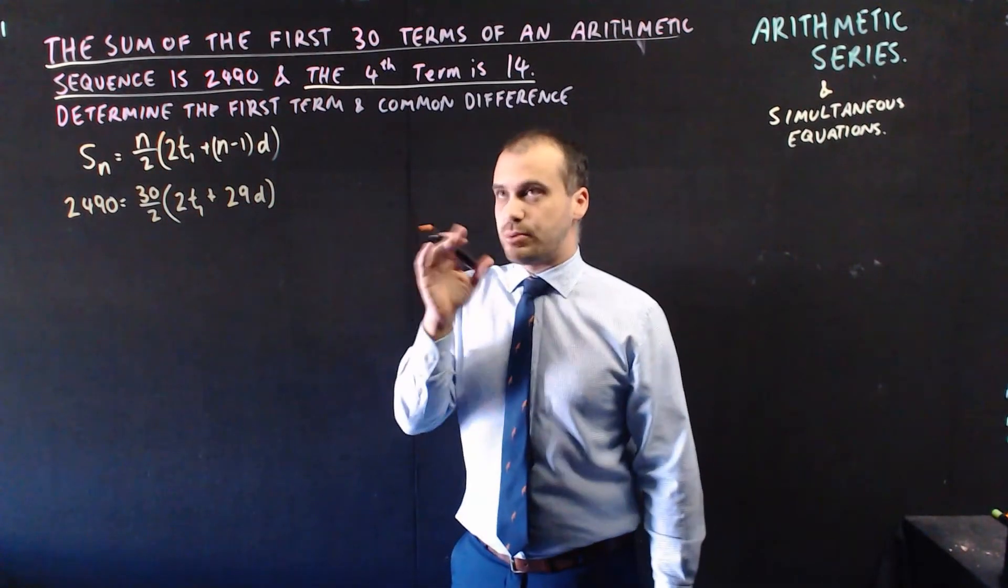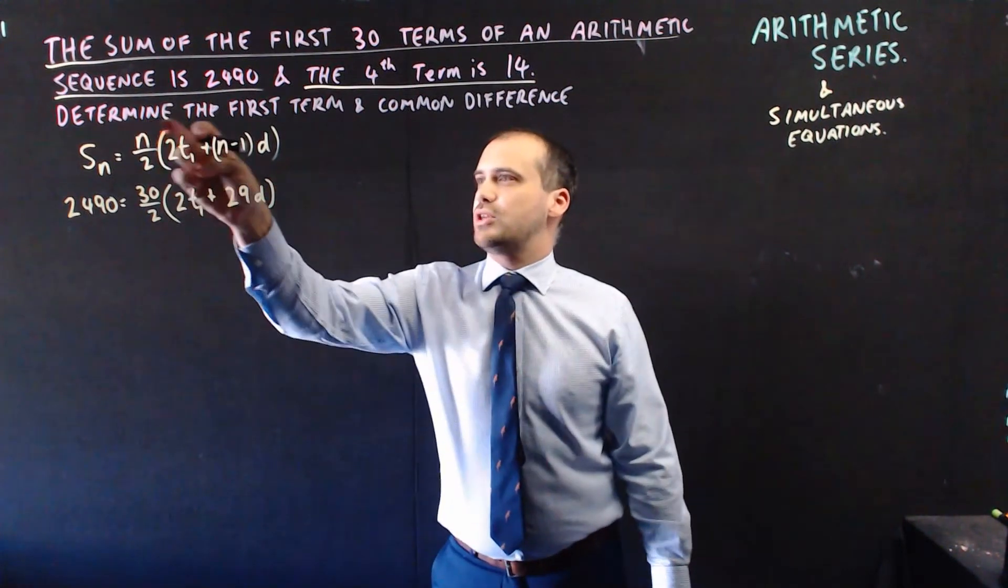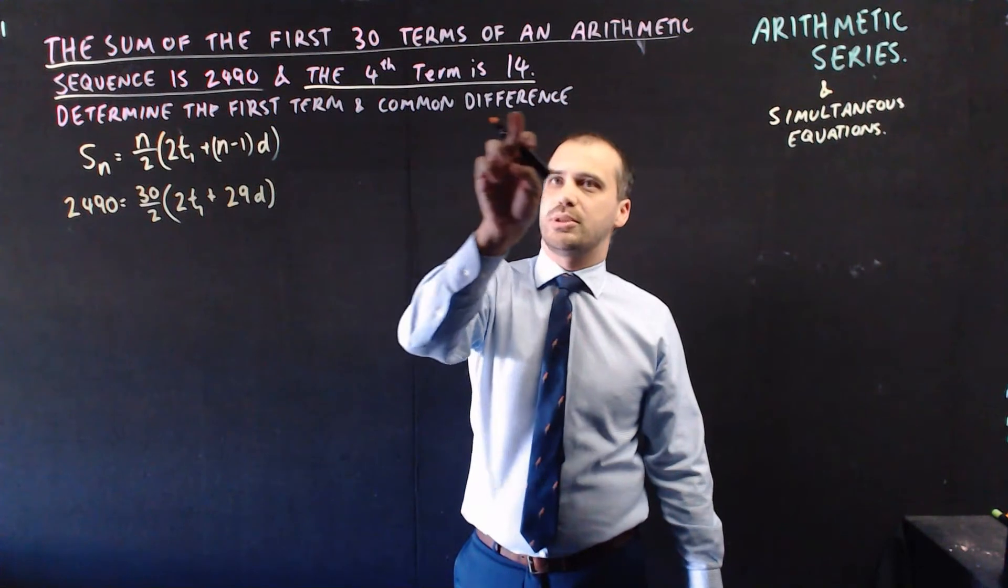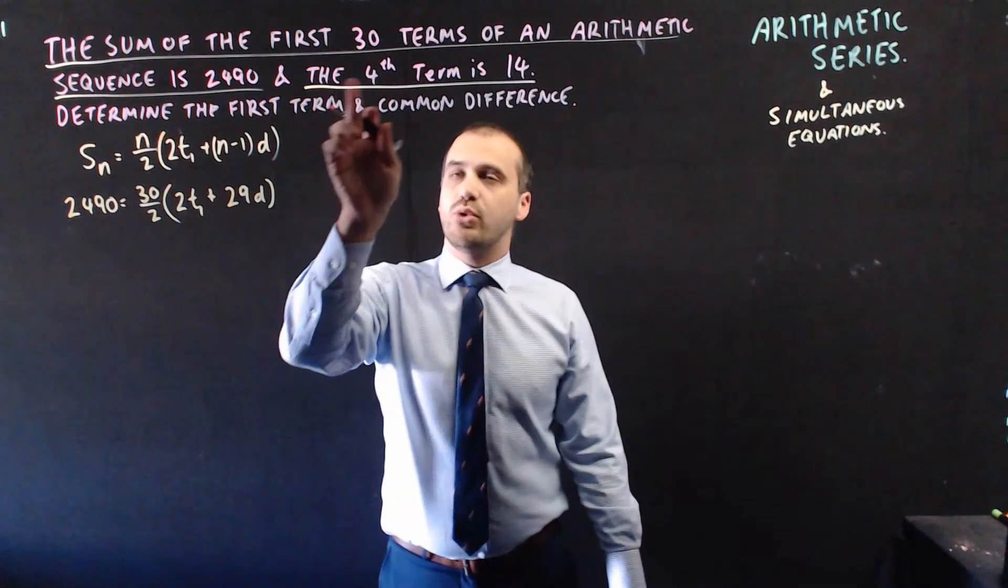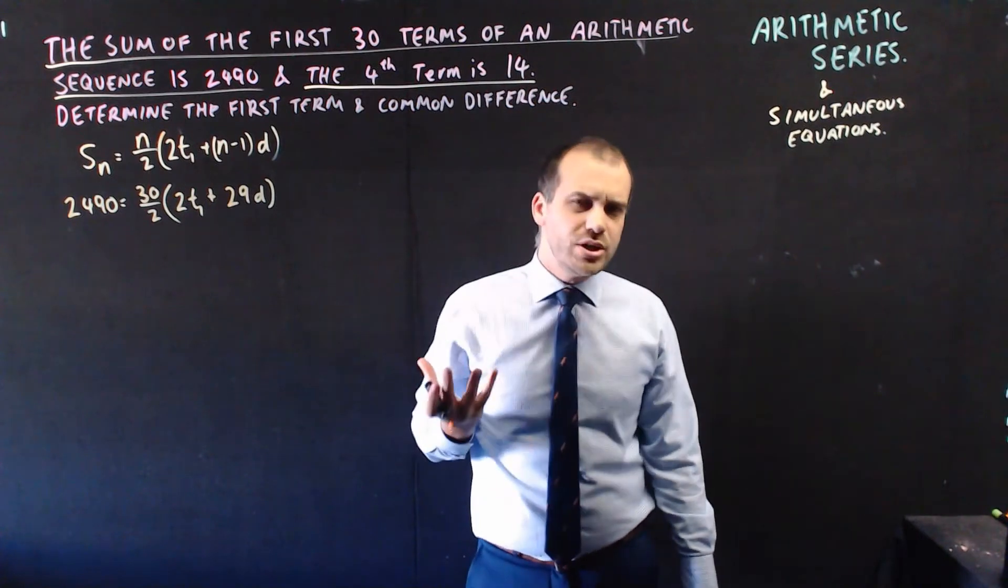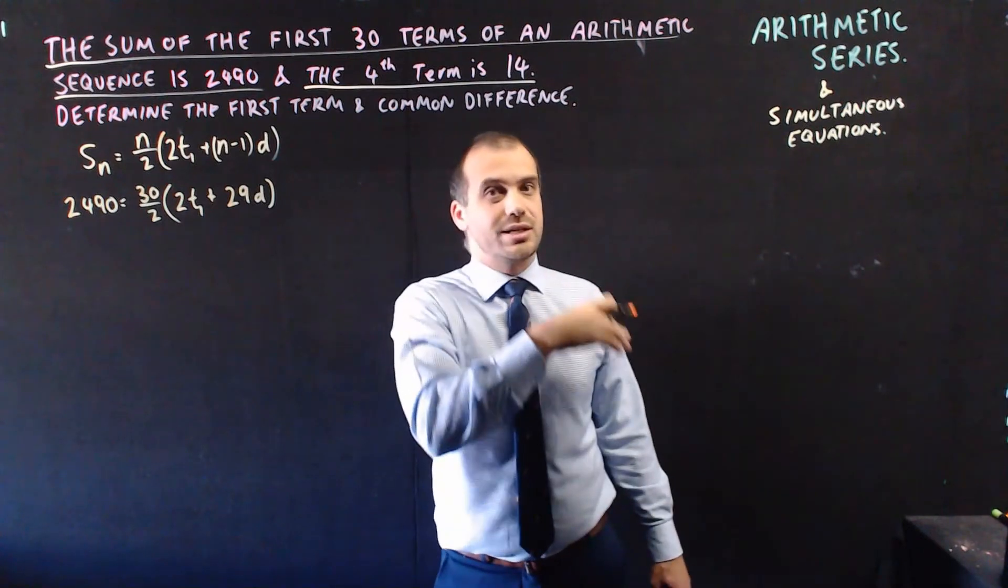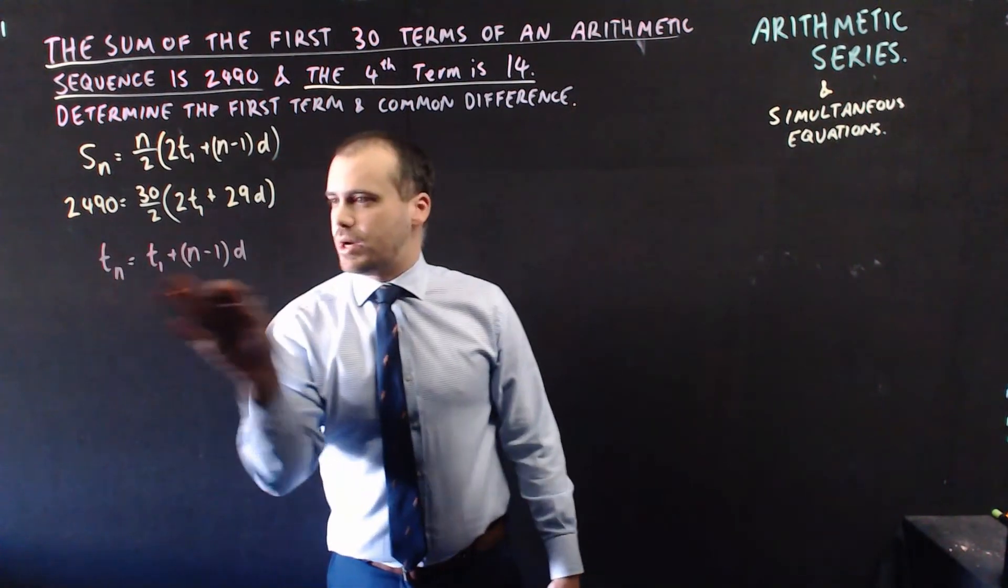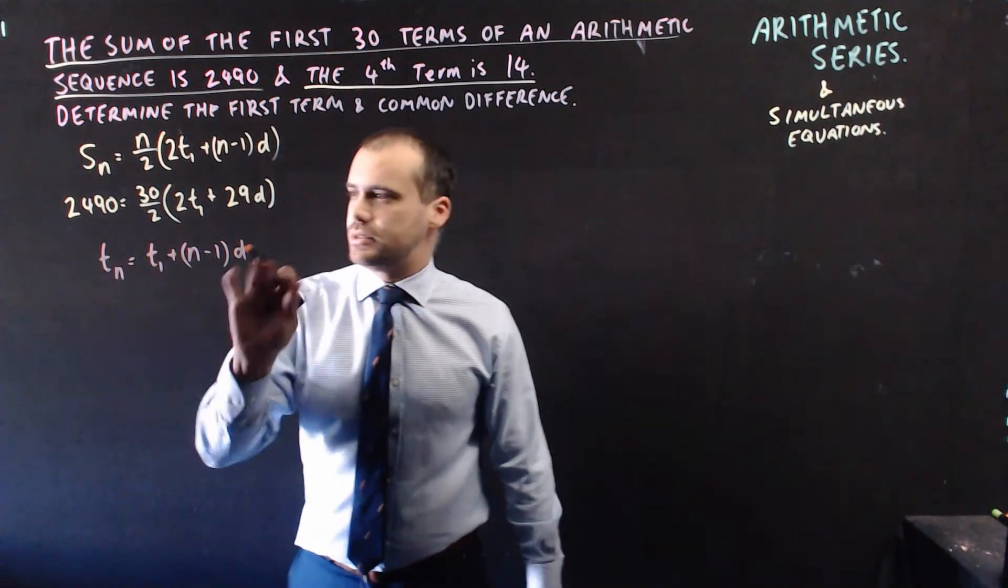Alright, so you can see here that we have two unknowns, the first term and the common difference, which is what we're trying to determine. Alright, so what about this one here? The fourth term is 14. No mention of a sum there, so it's not our sum formula we're using, we're using our arithmetic sequence formula, which is this one right here.